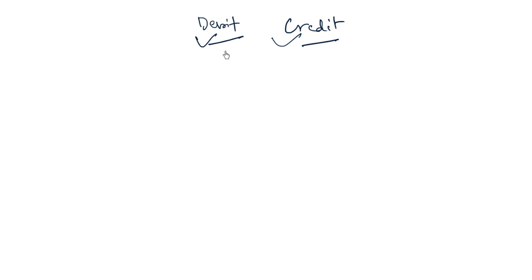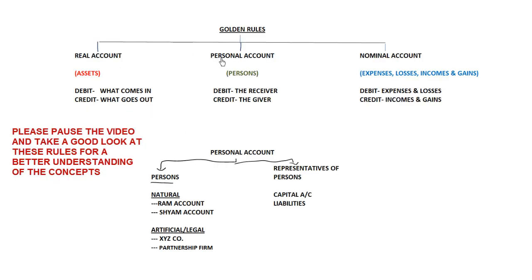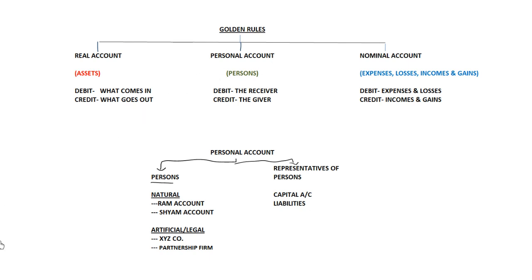In this video we'll take different transactions as examples and try to decode the accounts involved for the debit aspect and the accounts involved for the credit aspect, and finally post journal entries for the same. We'll take a list of events which happened in a business and decode which account will be debited and which will be credited using the golden rules.